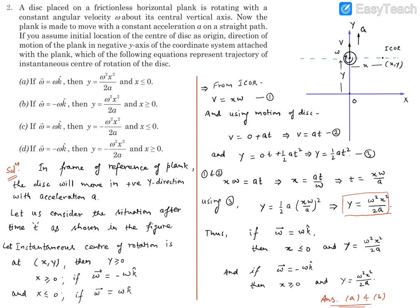So y will be equal to this. Now there are options we need to talk about. Now option A says when omega is omega k, what we took omega as minus omega k, so we took this.